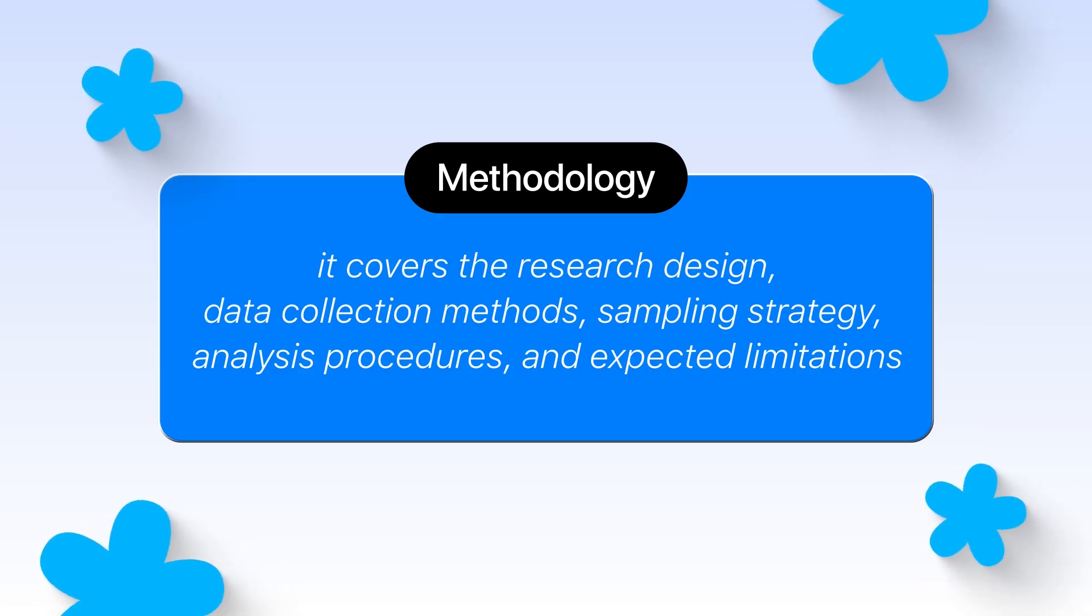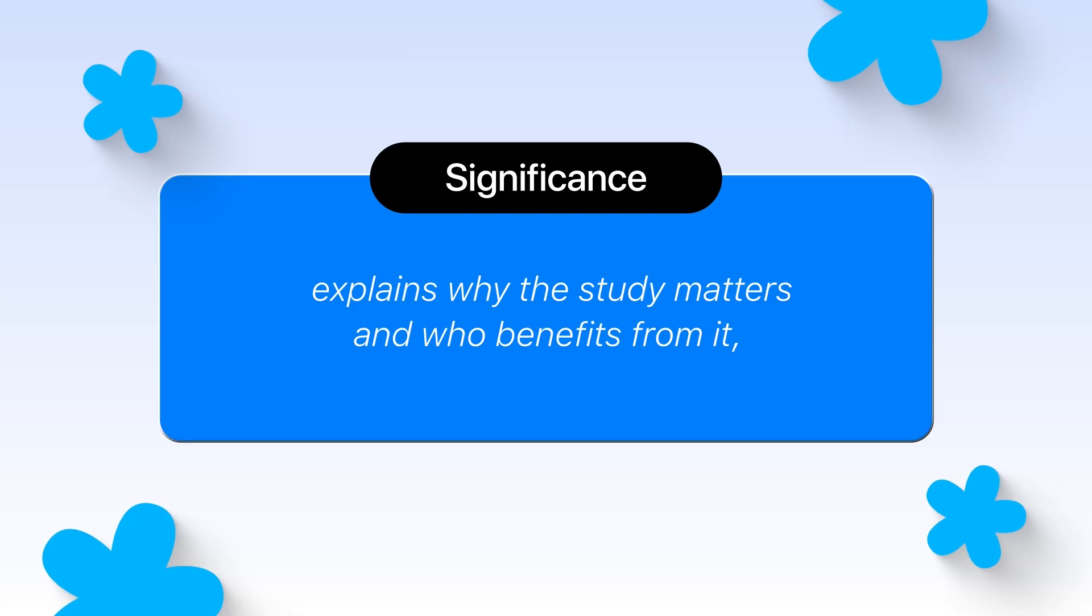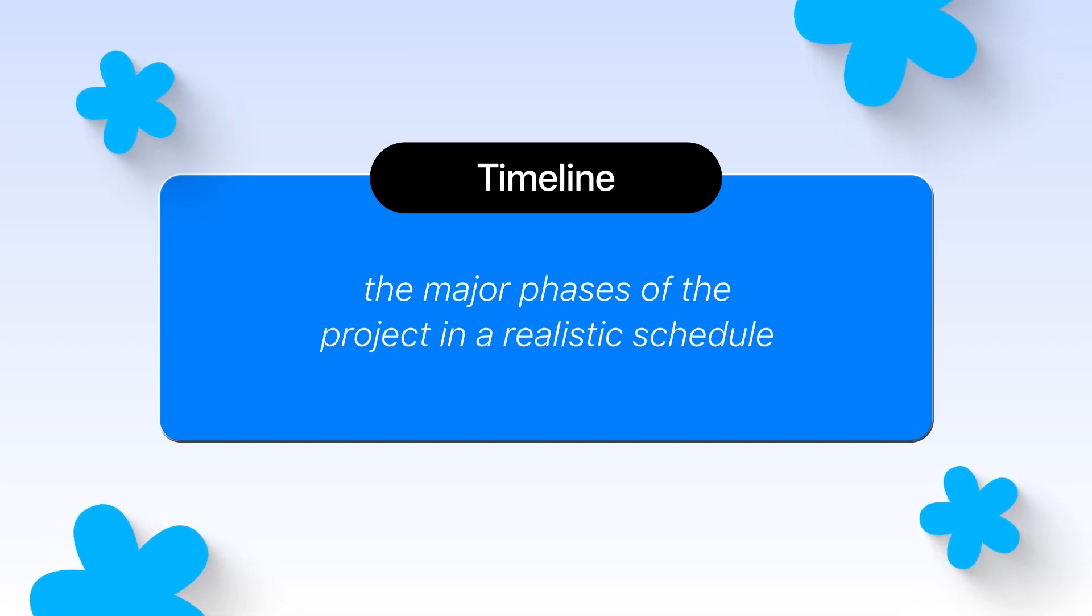It covers the research design, data collection methods, sampling strategy, analysis procedures, and expected limitations. The significance section explains why the study matters and who benefits from it, while the timeline breaks down the major phases of the project in a realistic schedule.